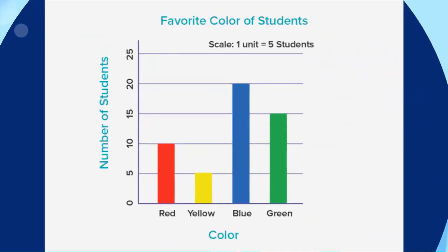We have over here the favorite color of students. As you can see, we have the number of students: 0, 5, 10, 15, 20, 25. We have the favorite colors: red, yellow, blue, and green. One unit equals five students. We have red with 10 students and yellow with 5 students.